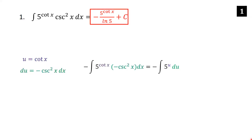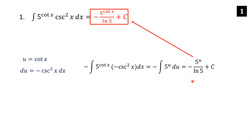Now doing the substitution: in place of cotangent x we put u, and in place of negative cosecant squared x dx we put du. This is a standard integral — 5 to the u becomes 5 to the u over ln 5. Don't forget the minus sign, add the arbitrary constant, then replace u by cotangent x.